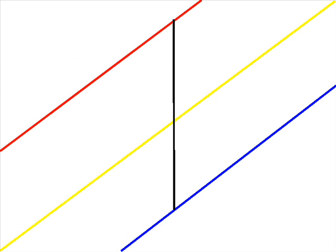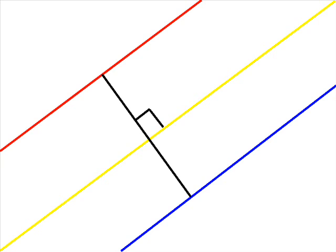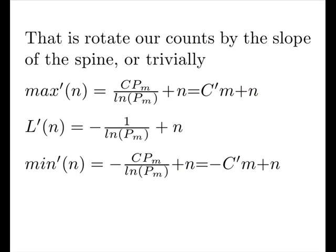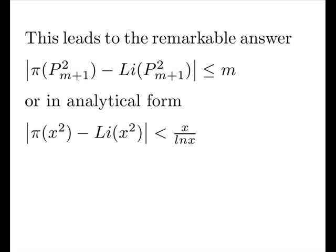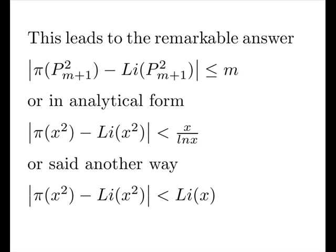Instead of this, we do this. That is, rotate our counts by the slope of the spine, or trivially, we get these amazing results that's related to the index. Index plus the count. So, it leads to the remarkable answer that our psi function is strictly bounded less than or equal, note the equal sign, with our m, the index. Or in analytical form, it's x over log x. Or here's a really pretty way, it's the log integral at x.